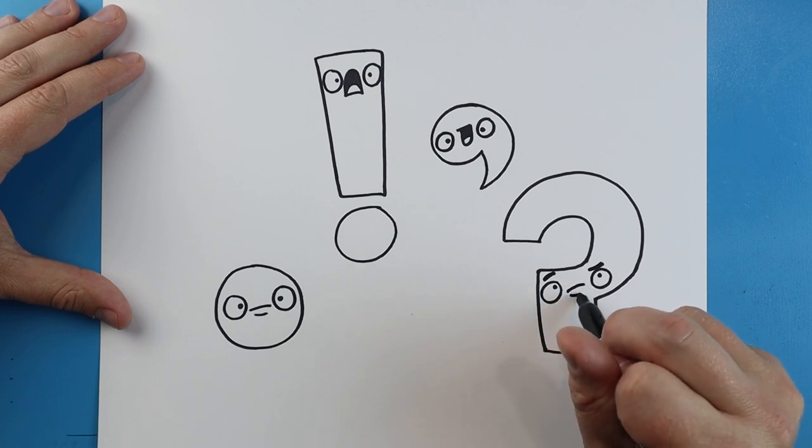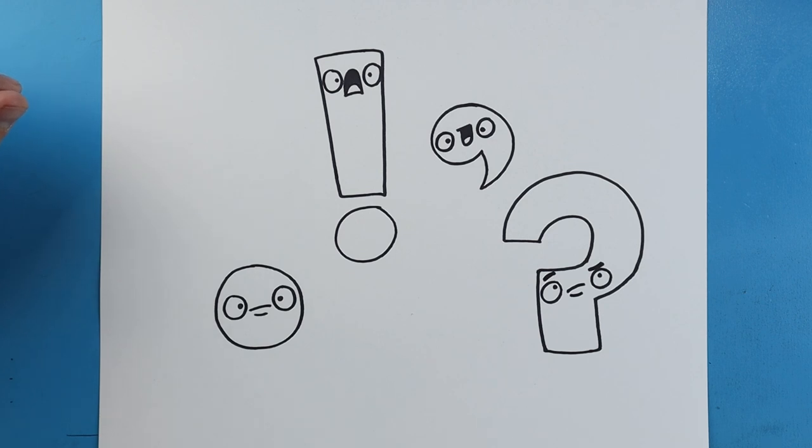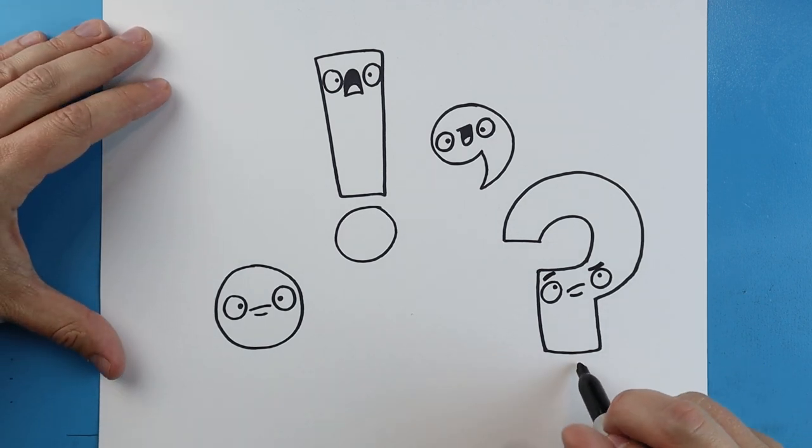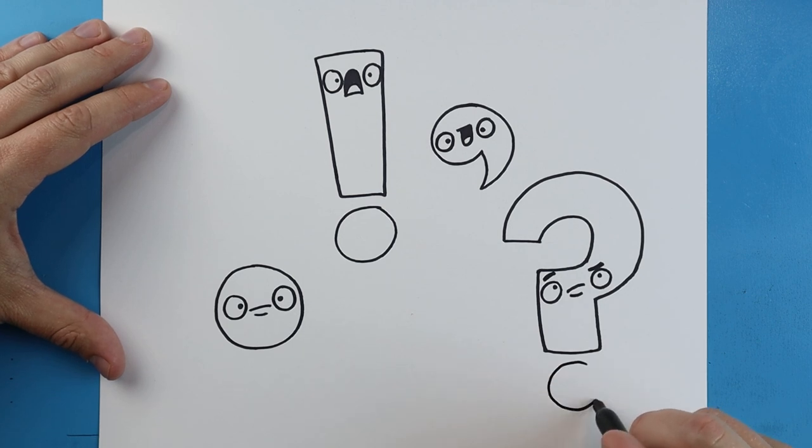Make a little line like this, and a little curved line up here. Then starting here, we'll add a little circle shape at the bottom.